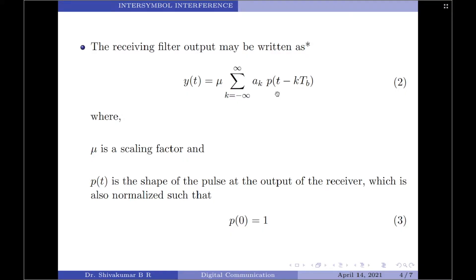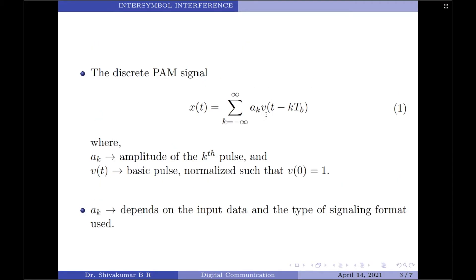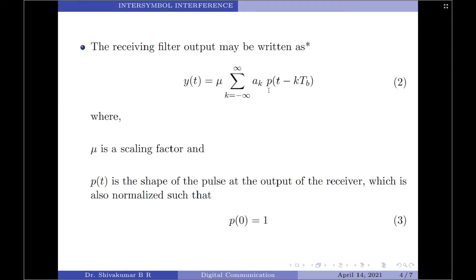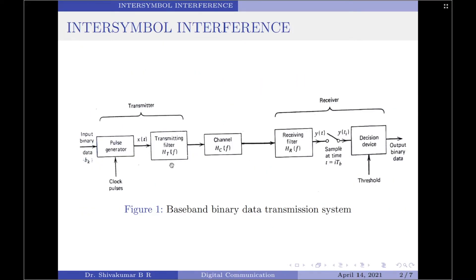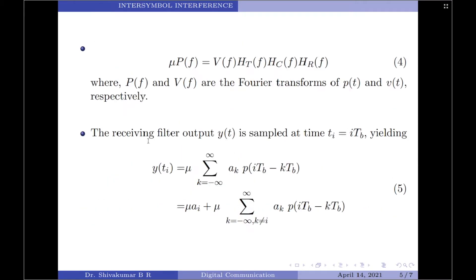Coming back to this equation, the shape of the pulse has now changed from V(t) to p(t). The shape of the pulse at the transmitter output is V(t), whereas the shape at the receiver output is p(t). This change is due to the cascade connection of the transmitting filter, the channel, and the receiving filter. We can relate them in the frequency domain by: mu times P(f) = V(f) times HT(f) times HC(f) times HR(f), where HT(f), HC(f), and HR(f) represent the transfer functions of the transmitter, channel, and receiver respectively.